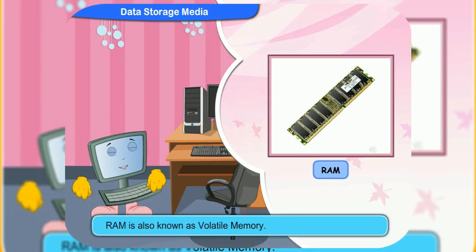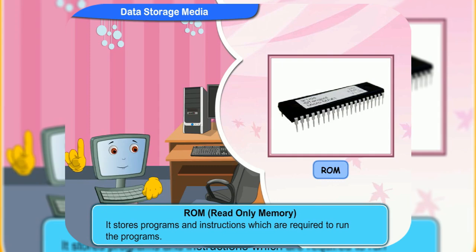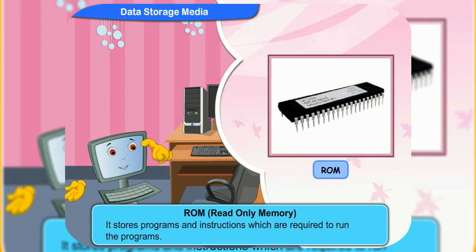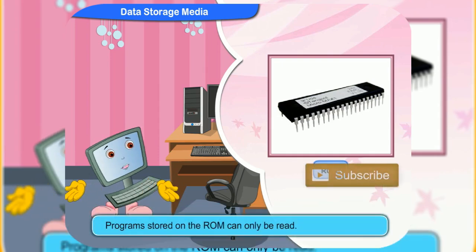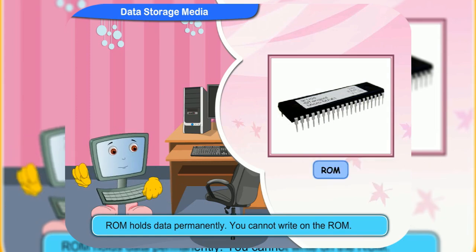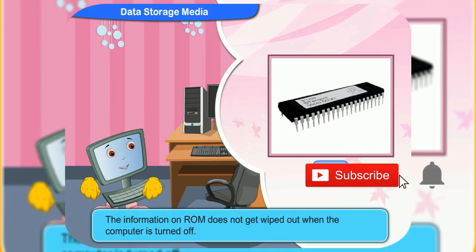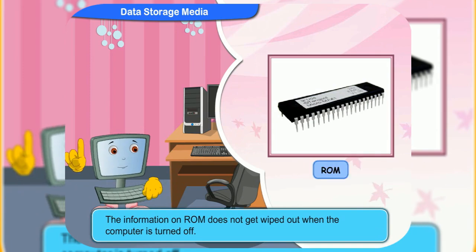So, RAM is also known as volatile memory. ROM stands for read-only memory. It stores programs and instructions which are required to run the programs. Programs stored on the ROM can only be read. ROM holds data permanently. You cannot write on the ROM. The information on ROM does not get wiped out when the computer is turned off.